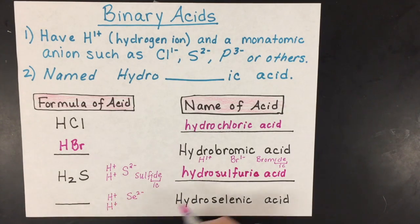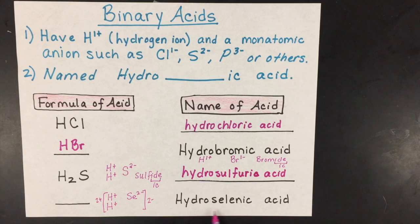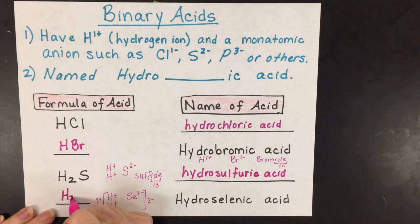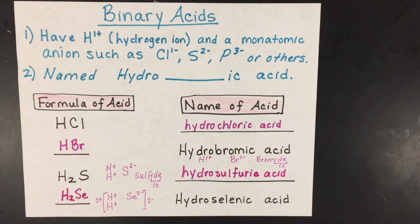Because this total charge has to add up to this total charge and equal zero. So hydroselenic acid is going to be H₂Se, denoting that there are two hydrogen ions to match the charge of the selenium ion, which is a two minus.